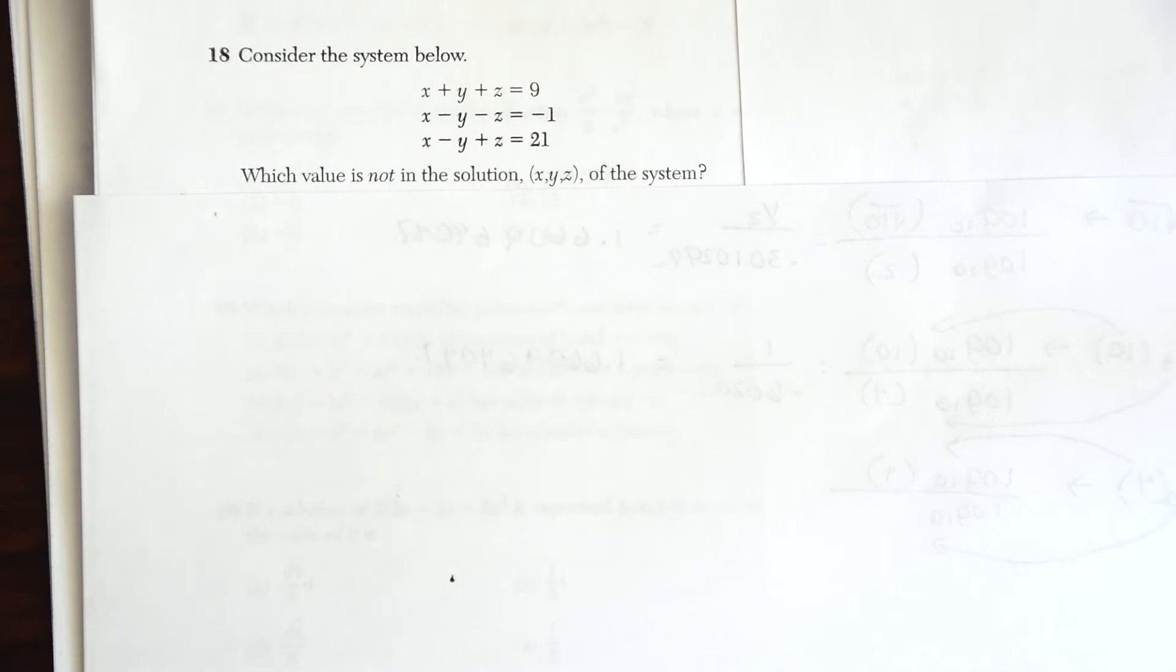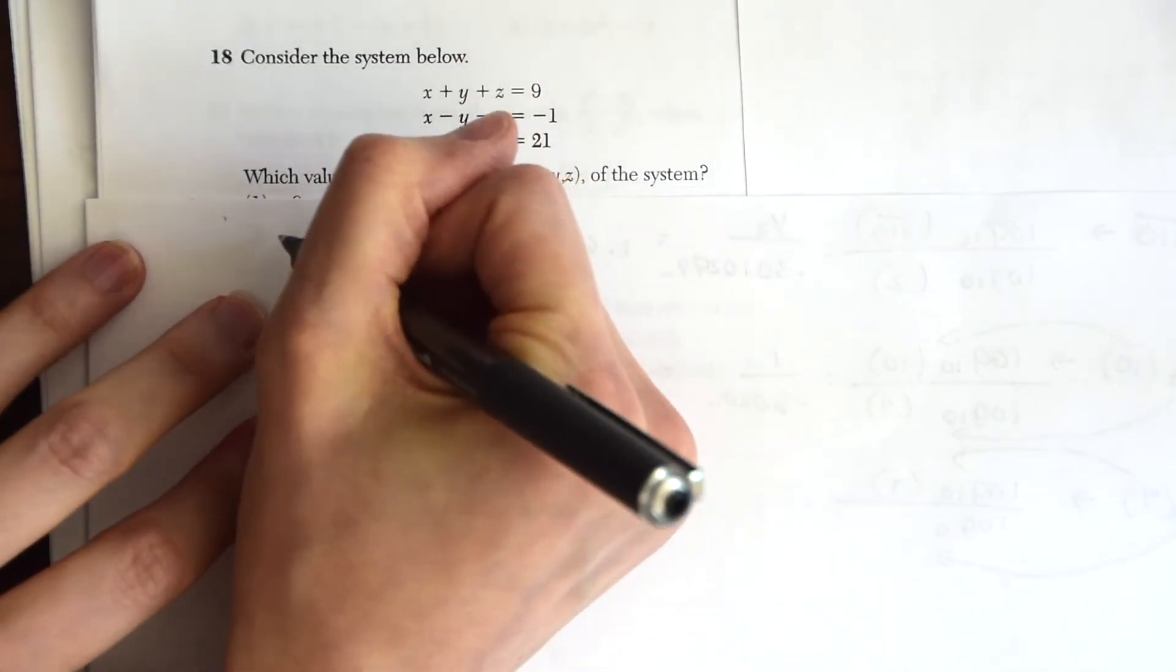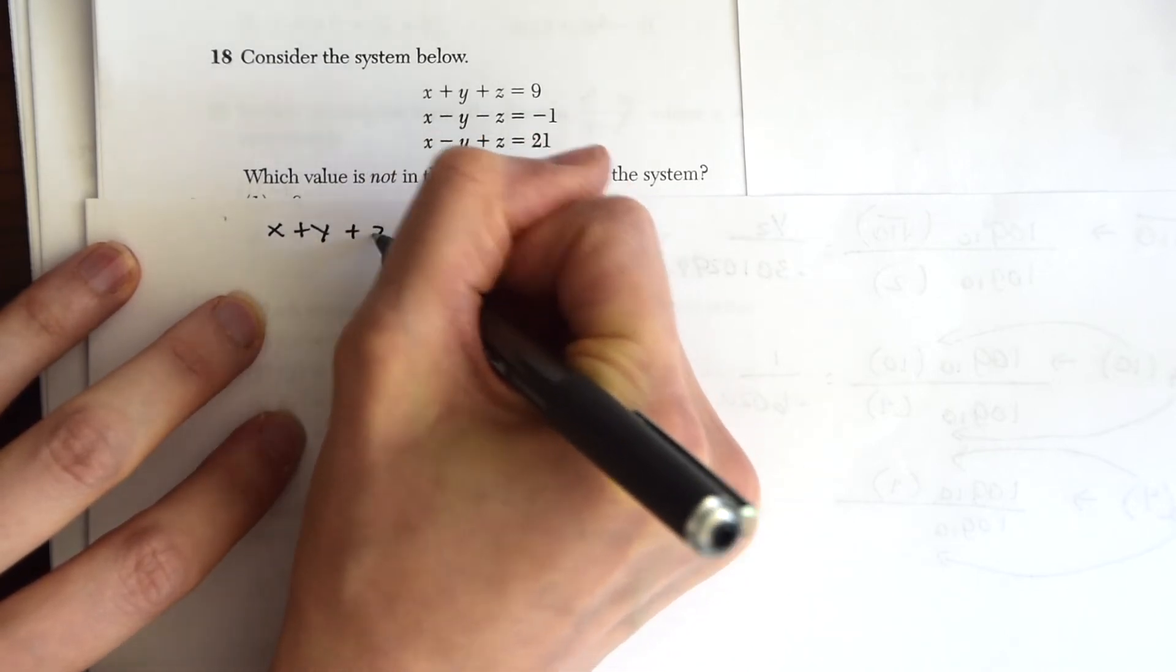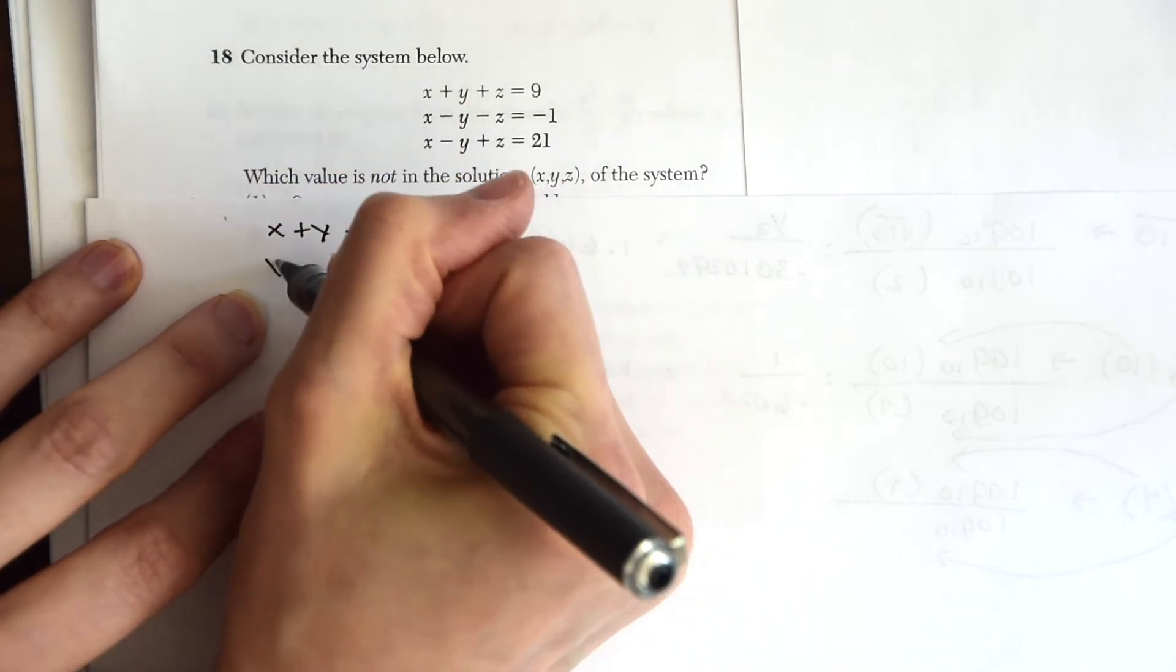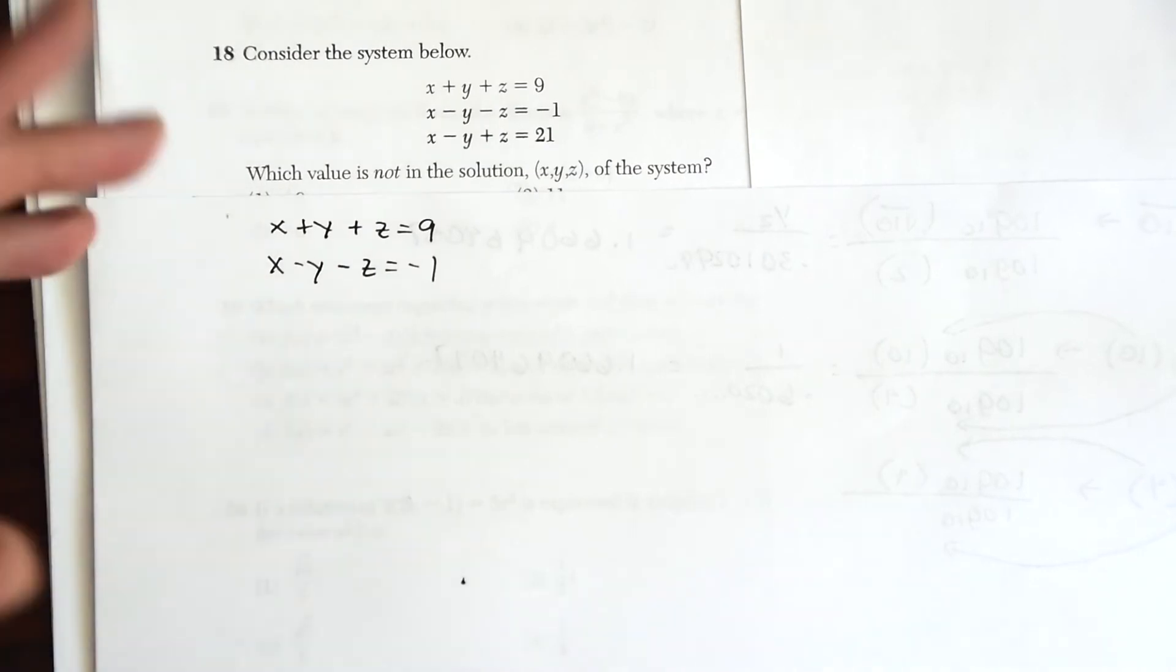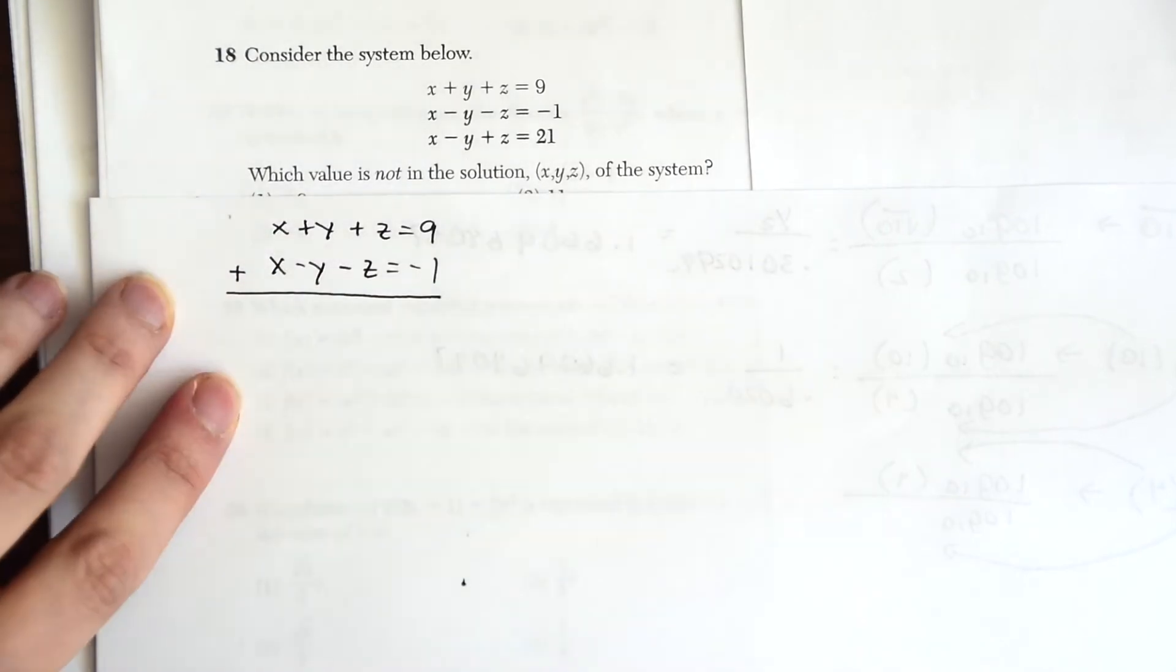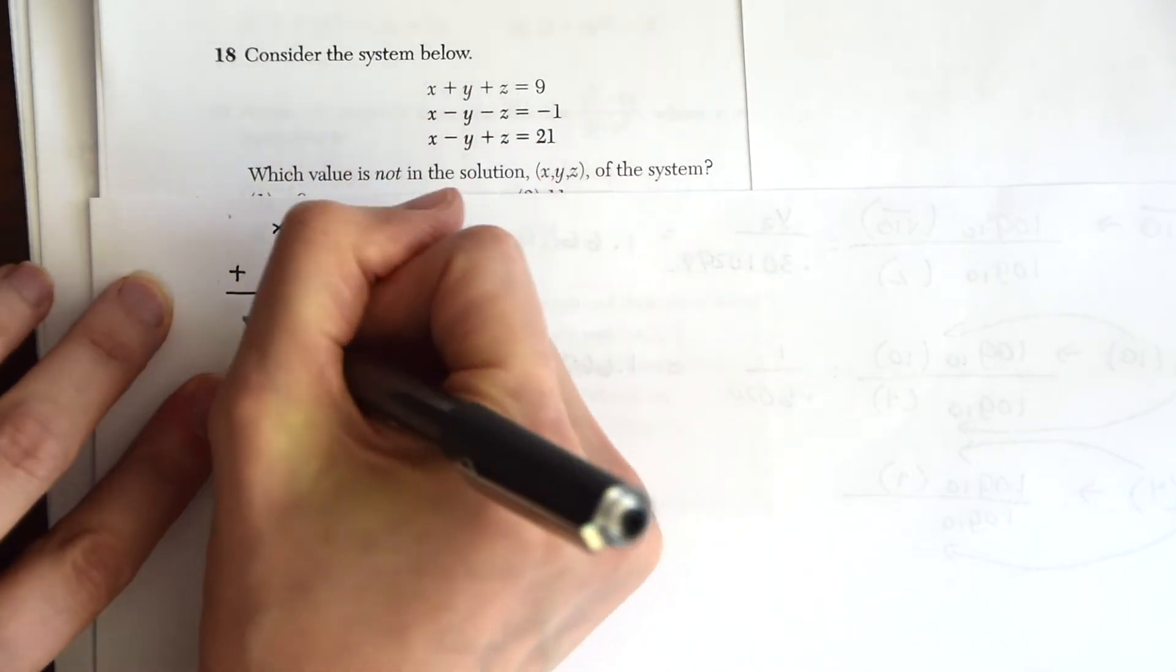So whenever you want to find x, y, or z when you have these three term unknowns, just take a pair of the equations. So let's do x + y + z = 9. And let's pick another one right here, x - y - z = -1. So now we want to, using elimination, we want to just add these two equations together and see what happens.